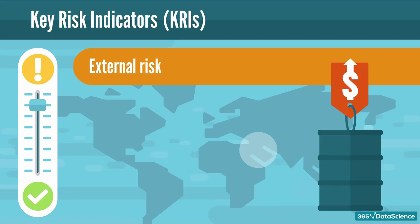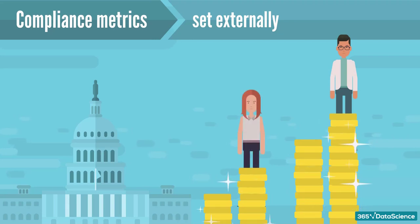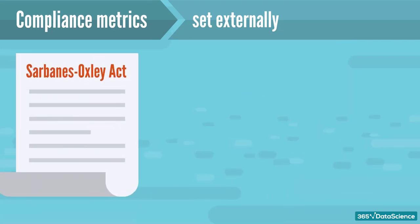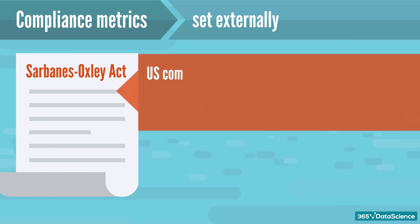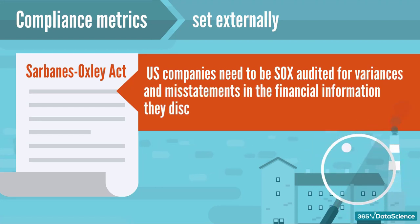In addition, we can have compliance metrics set by external parties such as auditors or government regulatory agencies. One example is the rule about equal pay scale between men and women in some countries. Another example is the Sarbanes-Oxley Act of 2002. According to it, U.S. listed companies like Coca-Cola need to be SOX audited for variances and misstatements in disclosed financial information. Other aspects tested in an SOX audit include the strength of internal controls and governance of the accounting department. When testing for variances and misstatements, auditors will review documents prepared by the company — this is another example of a compliance metric.